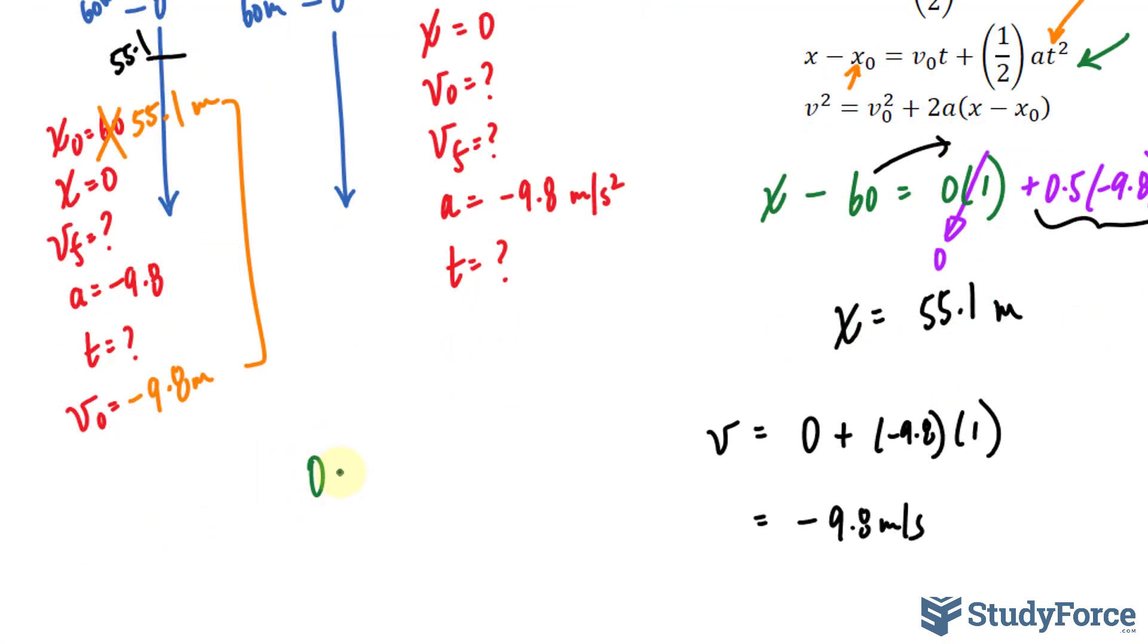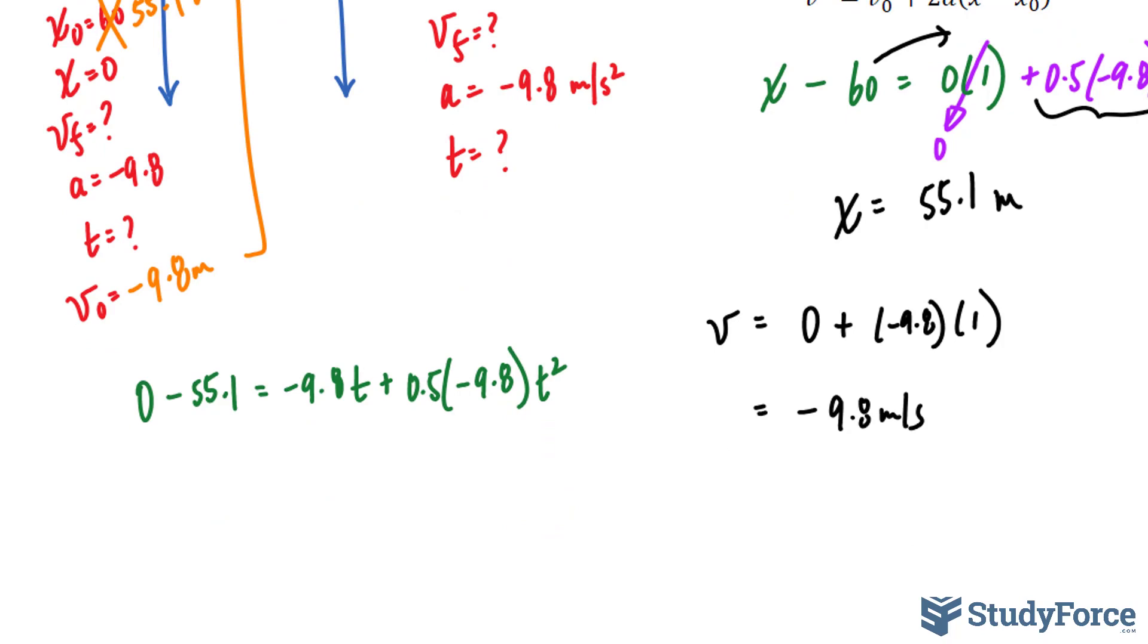So we can use that information to help us with coconut two. So I have the final value in which that coconut reaches, which is zero from the top. The initial was 55.1 equals the initial speed, which is negative 9.8 t plus 0.5 times the acceleration due to gravity, negative 9.8 t squared. Now, this looks like a quadratic, so expect to use the quadratic formula to find the time. I'll take this value over. I get negative 4.9 t squared minus 9.8 t plus 55.1.